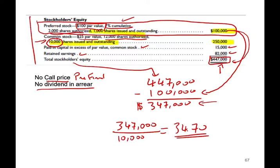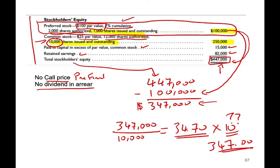Now, in this industry, if the market value of the stock should be 10 times the book value, then the price of the stock should be $347. How do we determine the multiple? Each industry has a different multiple, just like the P/E ratio. If your industry is going to grow and there's a lot of potential to earn more profit, your multiple might be 15. But if your company is already mature with no room for growth, maybe your multiple is only 5.